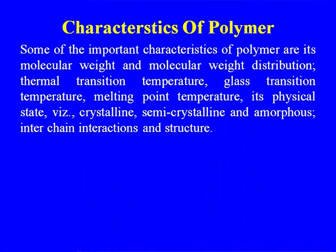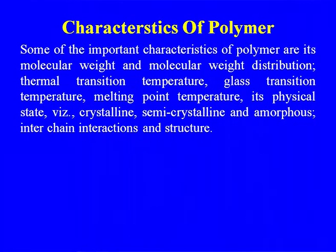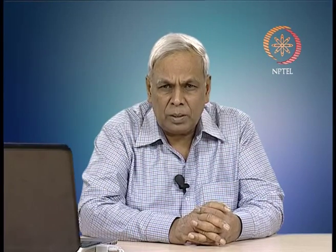Some important characteristics of polymers include molecular weight and molecular weight distribution, which have a significant impact on product quality. Thermal transition temperature, glass transition temperature, melting point temperature, physical state — whether crystalline, semi-crystalline, or amorphous — intermolecular interaction and structure are important properties. Two types of molecular weight are used in characterization: number average molecular weight and weight average molecular weight, calculated from mole fraction distribution and weight fraction distribution of different size molecules, respectively.